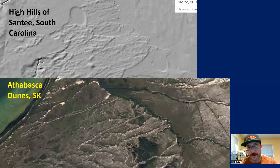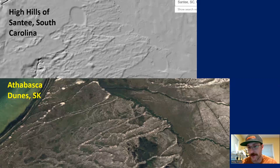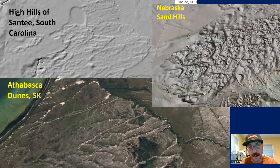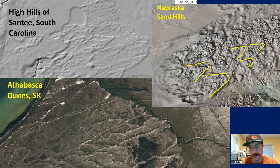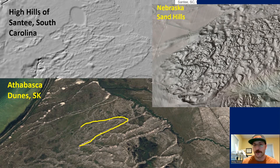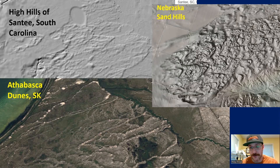You can look at sand dune complexes around the world today. The Athabasca dunes in Saskatchewan match nicely with what you see in coastal plain LIDAR — next to a big lake there. The Nebraska Sand Hills also show beautiful parabolic dunes with the chevron shape you see in coastal plain South Carolina LIDAR. All of these are parabolic sand dune complexes, so you can feel confident that those LIDAR features on the coastal plain that the bays hang out with are wind-blown sand features.